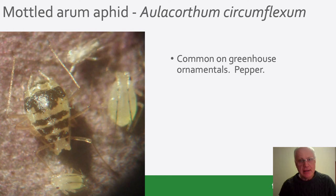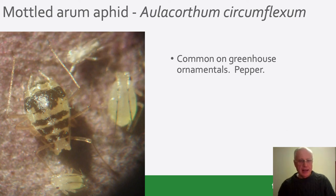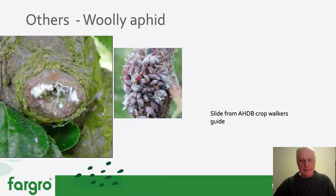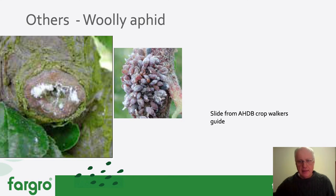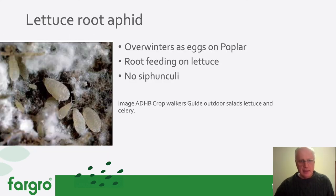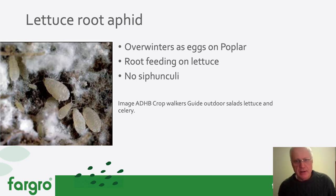Then we have the mottled arum aphid, Aulacorthum circumflexum — common on greenhouse ornamentals across a quite wide host range including pepper. The markings on the adult are quite distinct, though a little variable; the juveniles don't show those markings but are a similar colour to the adults. A few other examples shown here include the woolly aphid, found on woody plant species, where wax forms a wool-like covering protecting the aphid underneath. Then there is a root aphid — this example is a lettuce root aphid whose alternative host is poplar, where it overwinters. It root-feeds on lettuce and damage is only visible when you look at the damaged roots.